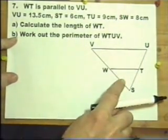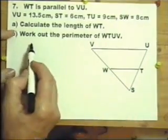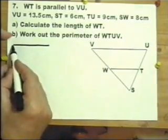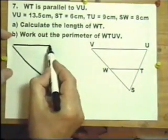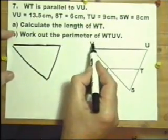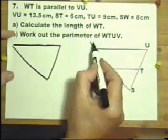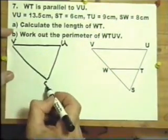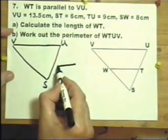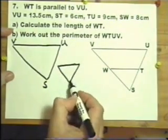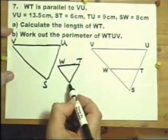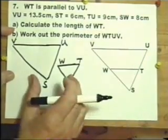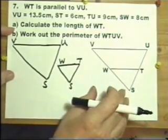It's an enlargement type question and I sometimes think it's a very good idea to appreciate you've got two triangles there. There's one, the triangle UVS, and you've got a smaller triangle TWS, and this triangle has been put on top of that one to produce that diagram.